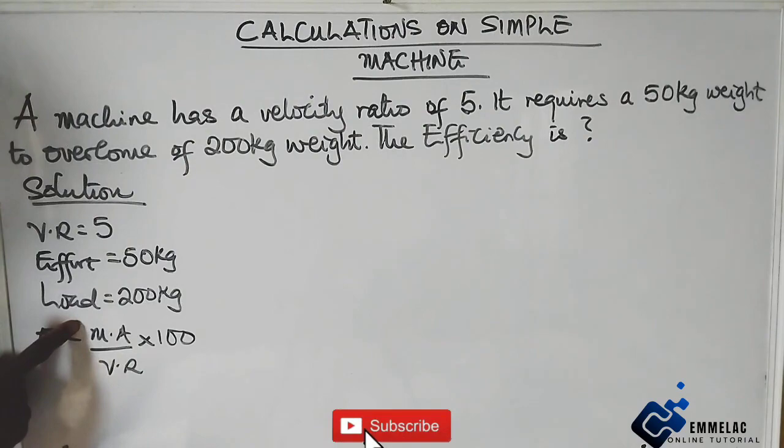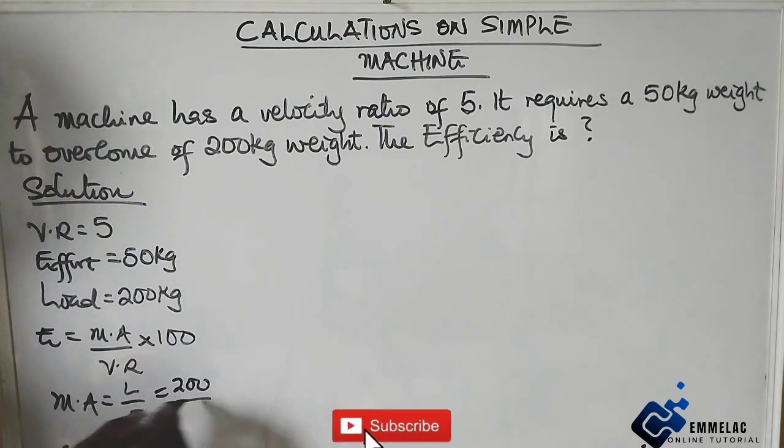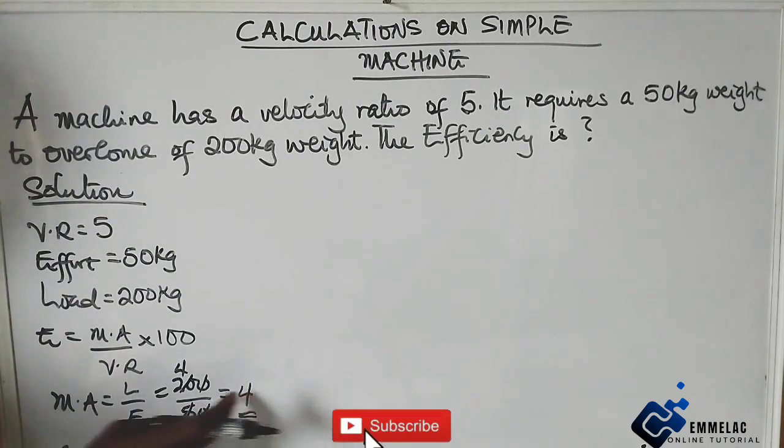We don't have the mechanical advantage, but we have the velocity ratio. Recall that mechanical advantage equals load over effort. From here we can ascertain the mechanical advantage. The load is 200 over 50, which gives us 4. So our mechanical advantage is 4.